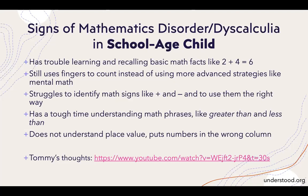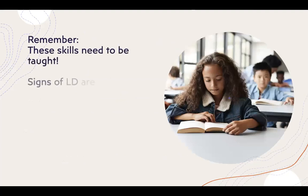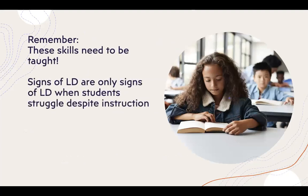Signs of math disorder in school-age children include: trouble learning and recalling basic math facts like 2+4=6, still using fingers to count instead of more advanced strategies like mental math, difficulty identifying math signs like plus and minus, not understanding math phrases like greater than and less than, and not understanding place value — putting numbers in the wrong column during written math. These skills do need to be taught; signs of learning disorders are only signs when students struggle despite instruction.